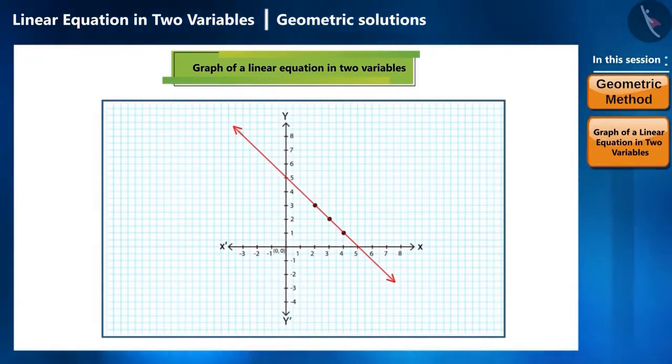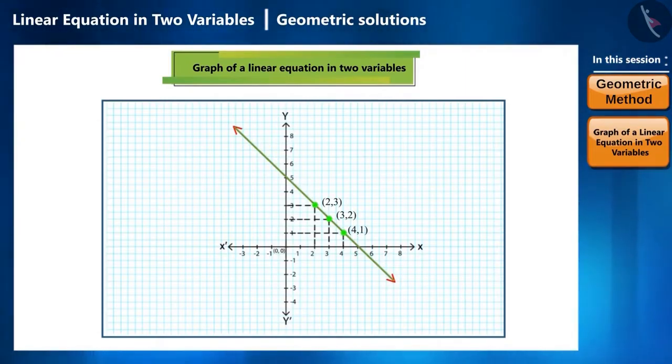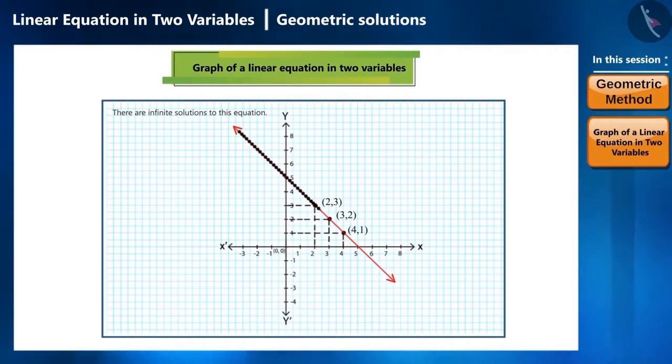This is what we call the solution of the equation. That means, every point on this line is the solution of this equation, which we can get by putting perpendicular on the x and y axis. The three points that we considered earlier and constructed this line are the solution of this equation. Apart from this, there are infinite solutions to this equation. No other points outside this line are the solution to this equation.